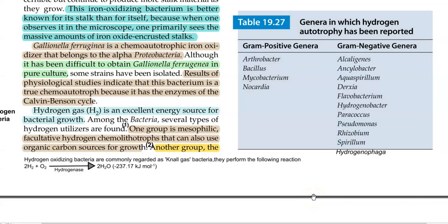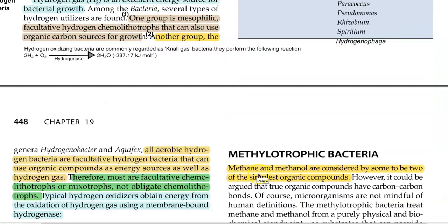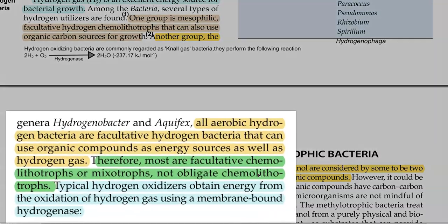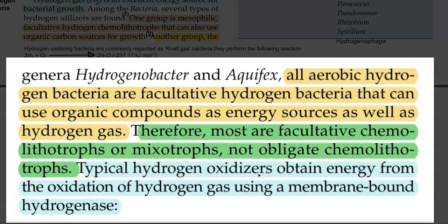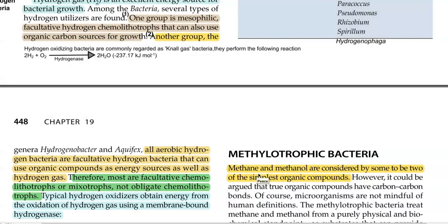This table shows the list of gram-positive and gram-negative bacteria in which hydrogen autotrophy has been reported. All aerobic hydrogen bacteria are facultative hydrogen bacteria in nature — that is, in addition to using hydrogen as energy, they can also use organic compounds as energy sources. Therefore, most facultative chemolithotrophs are mixotrophic in nature, and thus they are not obligate chemolithotrophs.